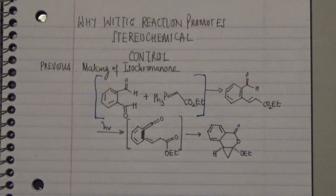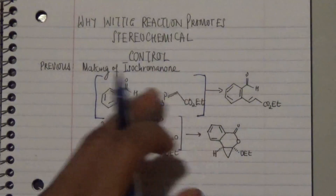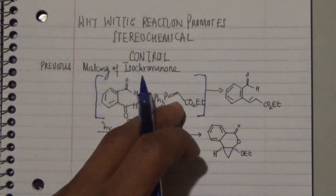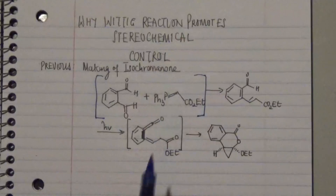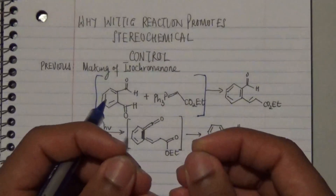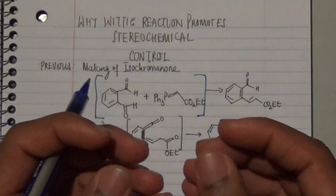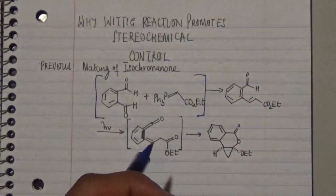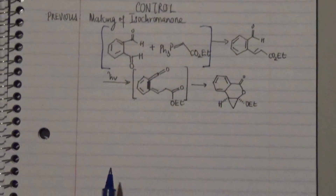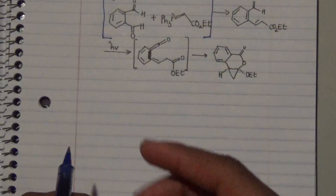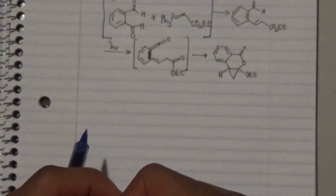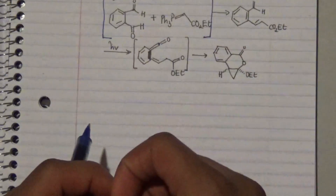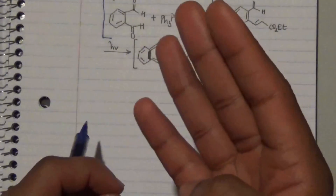Our main focus in this particular reaction is this particular combination of reagents. This reagent combination undergoes a Wittig reaction, and the key question is: why does this Wittig reaction promote stereochemistry and diastereochemistry control in this particular case?